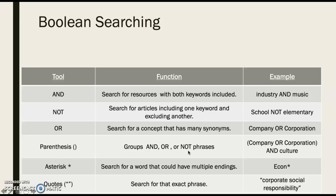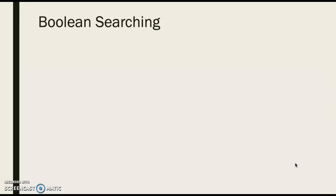Parentheses group collections of words together. So 'company or corporation' would be part one of your search, and then with an AND connector you add the second part — for example, 'culture.' An asterisk is the truncation symbol: it will give you everything that starts with the letters before it. So 'econ*' would return economist, economy, econometrics. If you have words like that, it's a great technique to use.